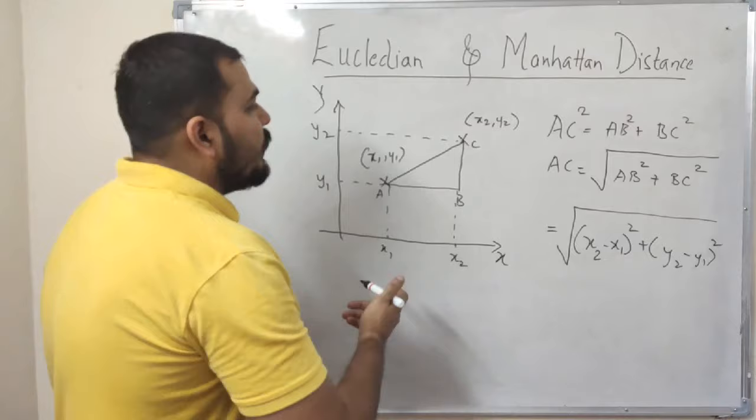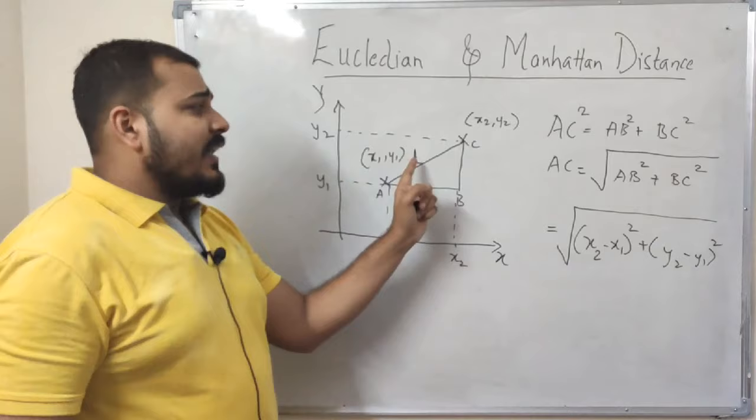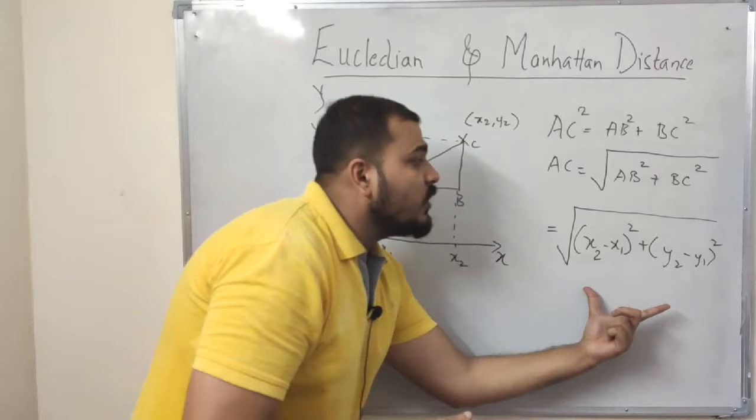And that is the most simplest formula of Euclidean distance. So here we are basically taking this hypotenuse value, which I am representing as D, in short I can also represent this as AC. I'm basically calculating with the help of Euclidean distance. So this is what Euclidean distance exactly is, the formula.